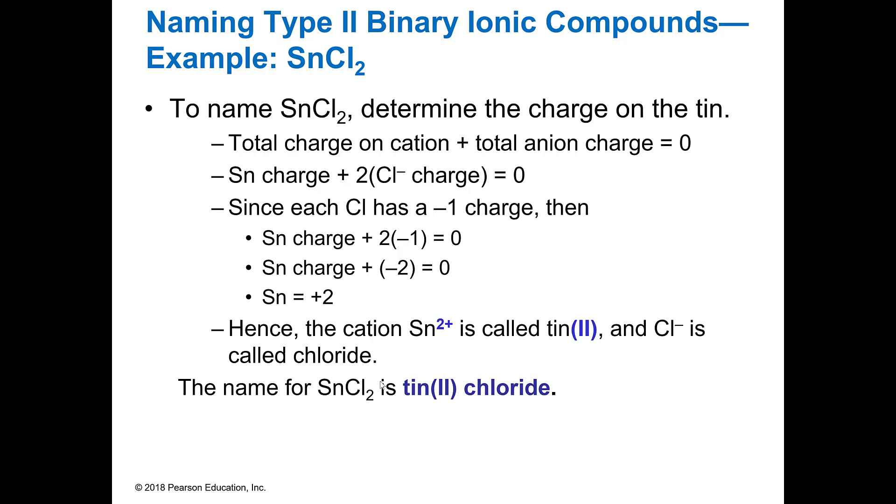All right. So now I've got SnCl2. Again, Sn is a transition metal. So I don't know what it is, but I do know what chlorine is. Love it when you got those group 7As because they're minus one. And so ever how many you've got of them, that's the total charge on them. So you've got a minus one times two is a minus two. I've got one of these to equal two. So the charge is two. So that is a plus two. So then I'm going to write this as tin. And remember, tin rhymes with Sn. So Sn, tin, two chloride.